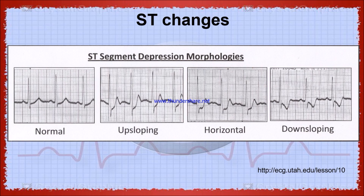When there is a subendocardial injury, the injured cells are close to the heart wall, resulting in systolic injury. So when there is systolic injury, the ST segment is depressed with an upslope. This is due to ischemia.